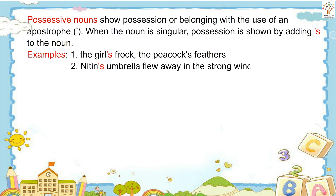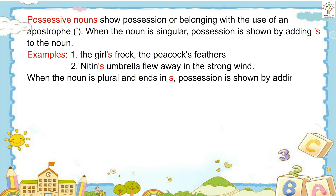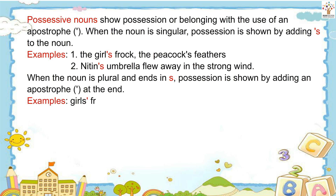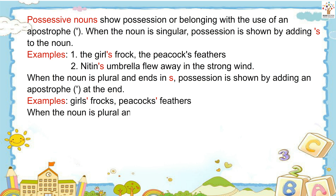When the noun is plural and ends in S, possession is shown by adding an apostrophe at the end. Examples: Girls', Peacocks' feathers. When the noun is plural and does not end in S, possession is shown by adding 's.